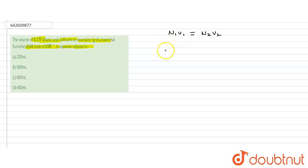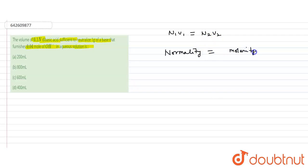Normality is equal to the number of gram equivalents of solute per liter of solvent. In other words, normality equals molarity divided by the n-factor, which is also called the valency factor.